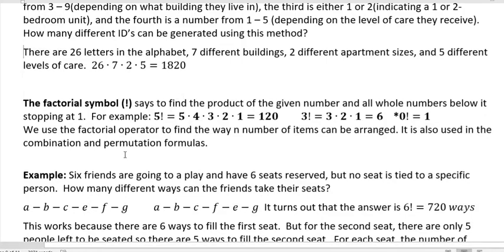The factorial symbol, exclamation point, says to find the product of the given number and all whole numbers below it stopping at 1. For example, 5 factorial is 5 times 4 times 3 times 2 times 1, which is 120. 3 factorial is 3 times 2 times 1, which is 6. And 0 factorial is 1. That's just something you're going to have to accept. So just know that because if it comes up, 0 factorial is 1.